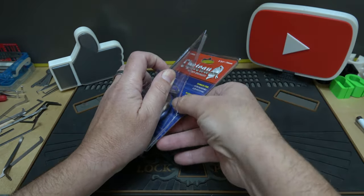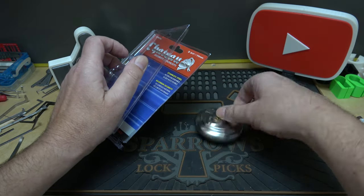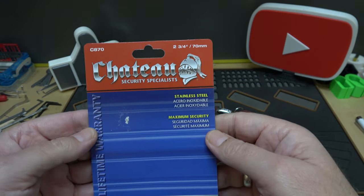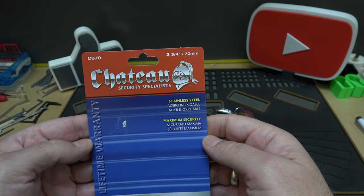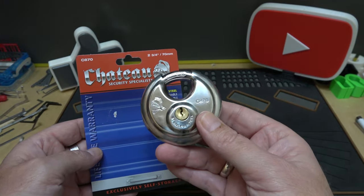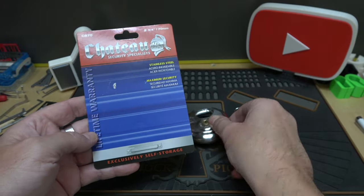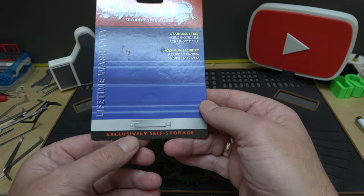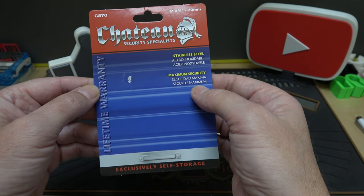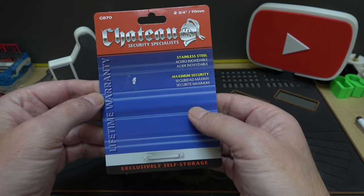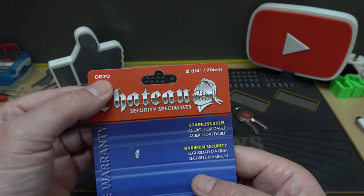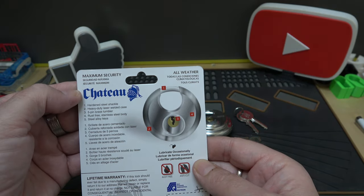There we go, bam pow! So what do we got here? We got a Chateau Security Specialist. These locks are very common on self-storages where you store your goodies. It even says down here exclusively self storage, lifetime warranty, stainless steel, maximum security, two and three-quarter inch or 70 millimeter. Again, it's the C870.